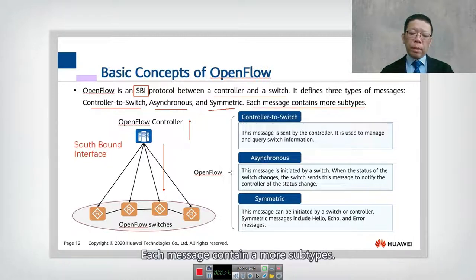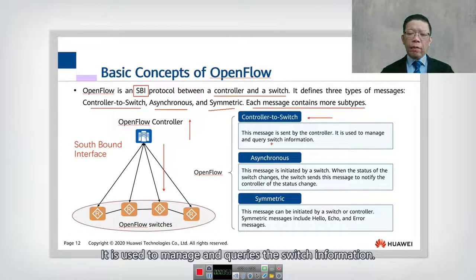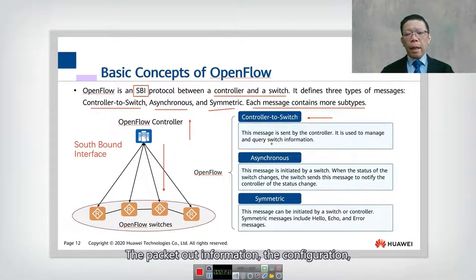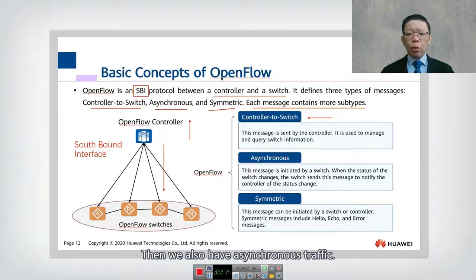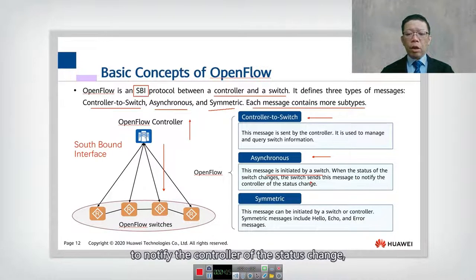Each message contains more subtypes. The first type is controller-to-switch: messages sent by the controller to manage and query the switch, including features, packet-out, configuration, read-state, and modify information. The second type is asynchronous: messages initiated by the switch when its status changes, notifying the controller. These include Packet-In, Flow Expired, and Port Status messages.